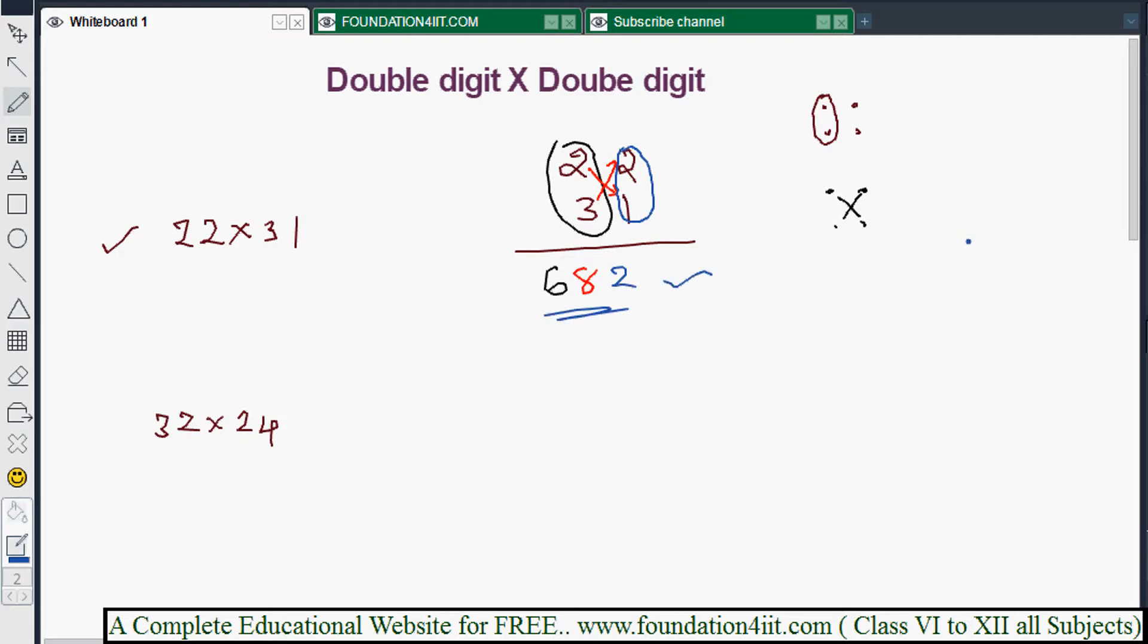Now observe 32 × 24. First, 3 × 2 = 6, single digit only. Next cross: 3 × 4 = 12 and 2 × 2 = 4. You can add both: 12 + 4 = 16. Then 2 × 4 = 8.